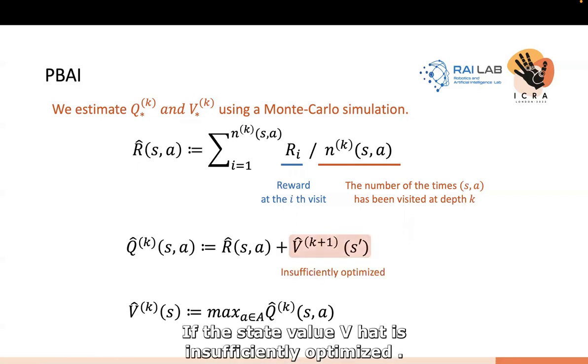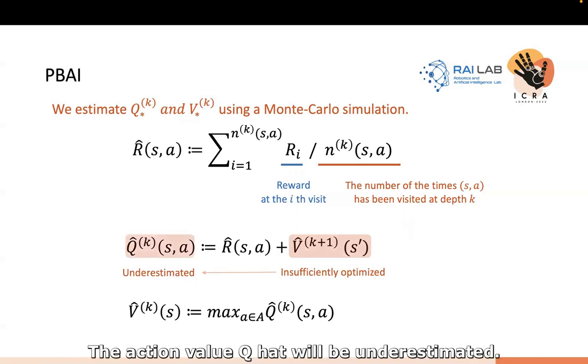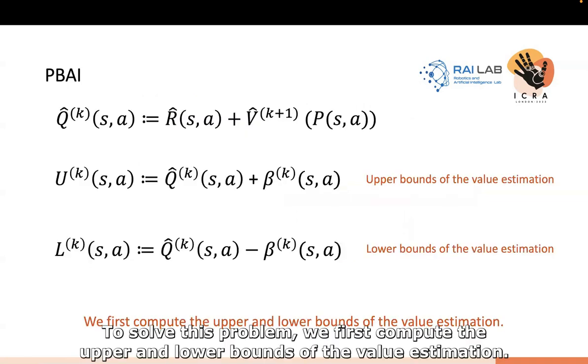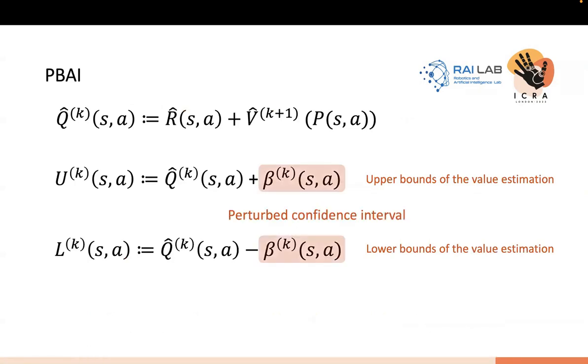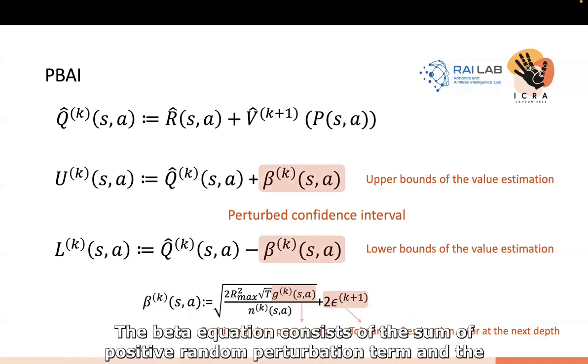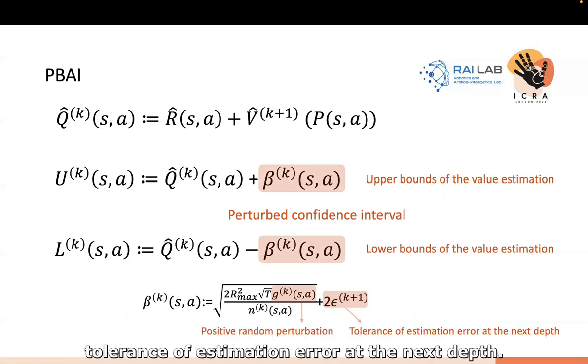If the state value V-hat is insufficiently optimized, the action value Q-hat will be underestimated. To solve this problem, we first compute the upper and lower bounds of the value estimation. The beta is the confidence interval by perturbation. The beta equation consists of the sum of positive random perturbation term and the tolerance of estimation error at the next steps.